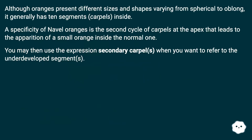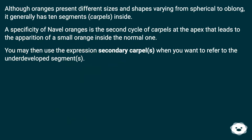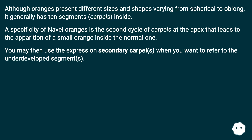Although oranges present different sizes and shapes varying from spherical to oblong, it generally has 10 segments, carpels, inside. A specificity of navel oranges is the second cycle of carpels at the apex that leads to the apparition of a small orange inside the normal one. You may then use the expression secondary carpels when you want to refer to the underdeveloped segments.